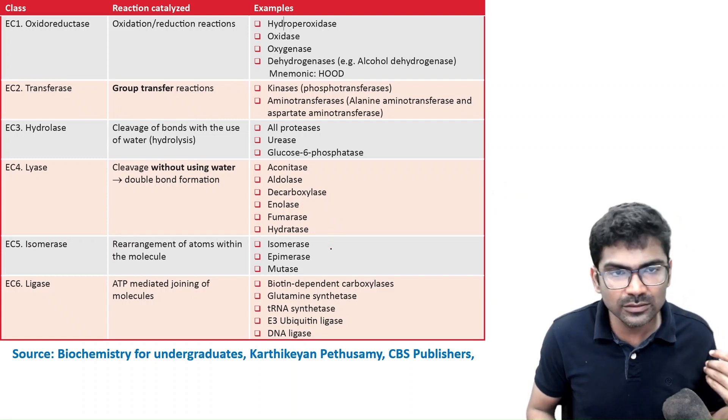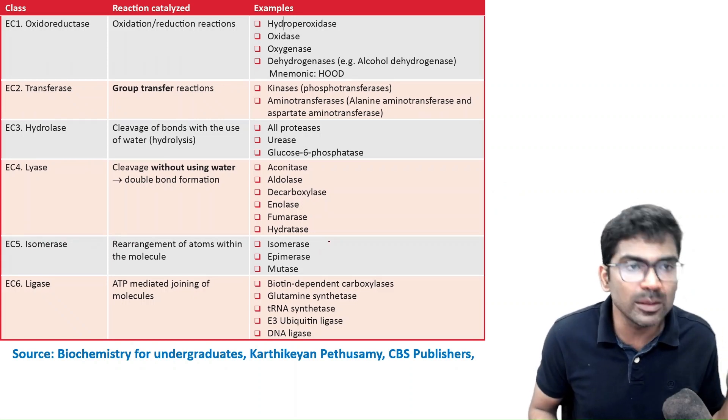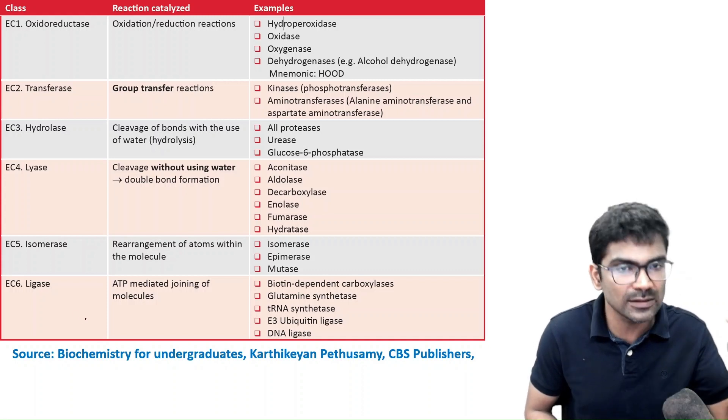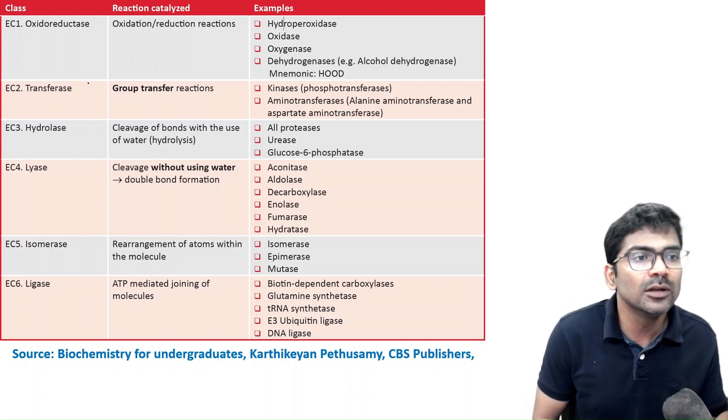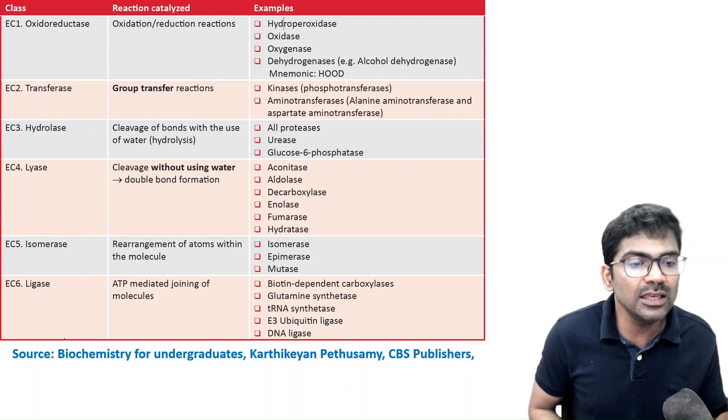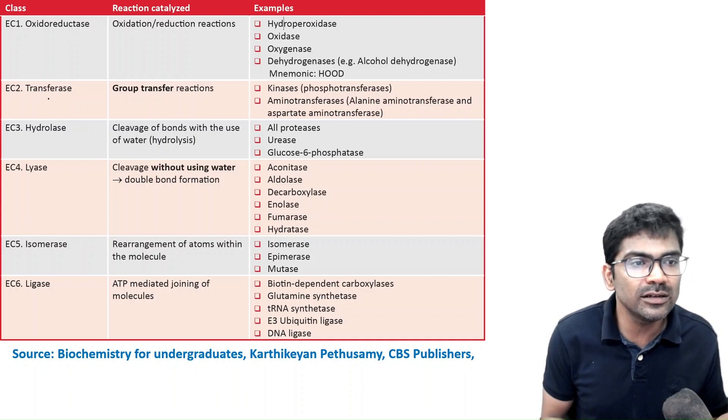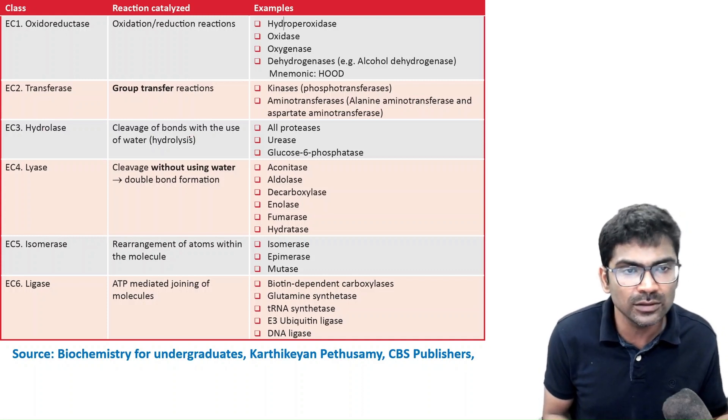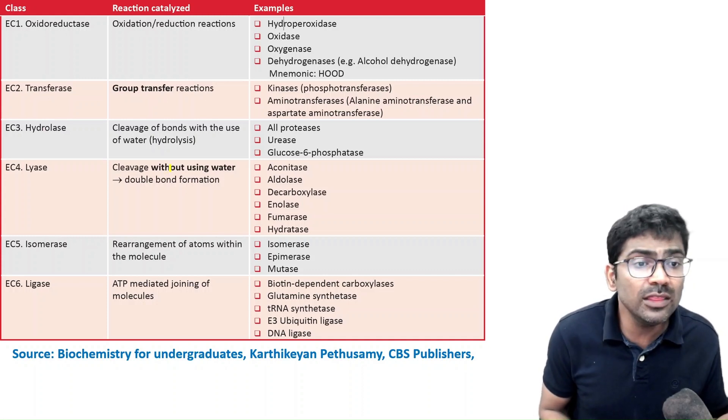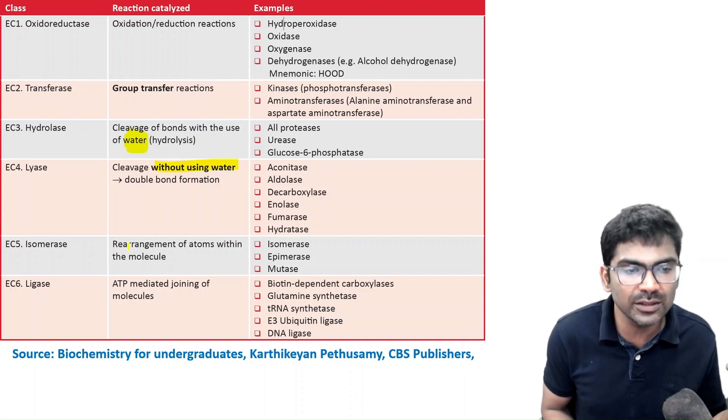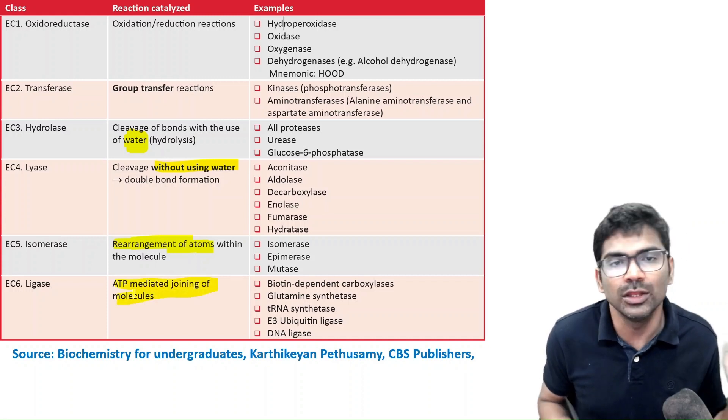So, let me quickly summarize. So, this is the table from my book. So, there are six classes. There is seventh class also, which I have mentioned in the book. So, O-T-H-L-I-L-T. So, you can see the definition. Oxidoreductase, catalyzed redox reaction, transferase, group transfer, hydrolase, cleavage of bonds with the use of water, lyase, without water, isomerase, rearrangement of atoms, ligase, ATP-mediated joining.